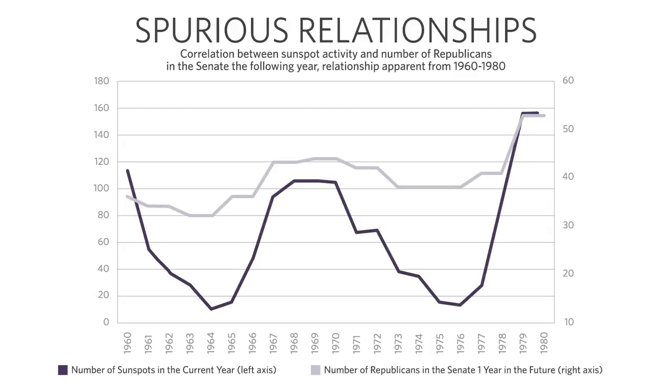The unfortunate thing about spurious relationships is that by random chance, some of them are going to persist for a long time. Here's an actual data example: the number of sunspots in the current year versus the number of Republicans in the Senate one year later, from 1960 to 1980. Over this 20-year period, as the number of sunspots declines, one year later the number of Republicans in the Senate declines; as sunspots go up, the number of Republicans goes up. Someone might look at this and say this has got to be a spurious relationship — there's no relationship between sunspots and Republicans, it's just random chance. That's true.